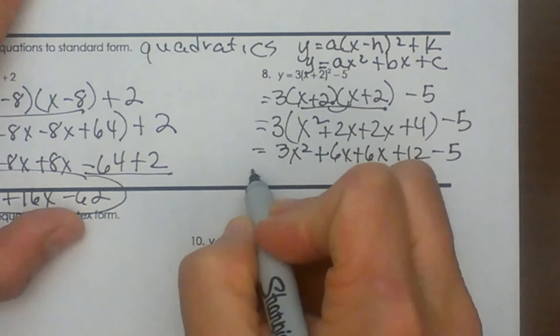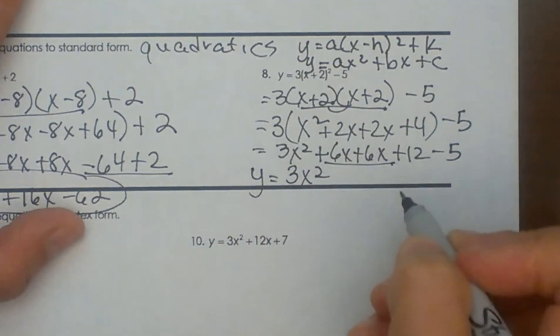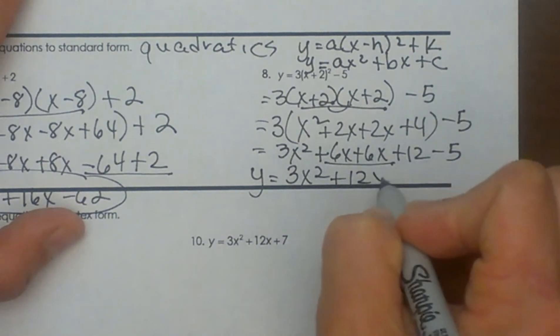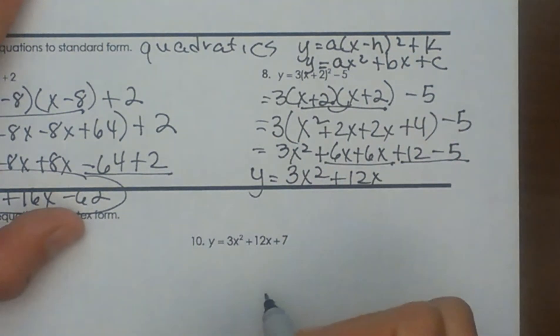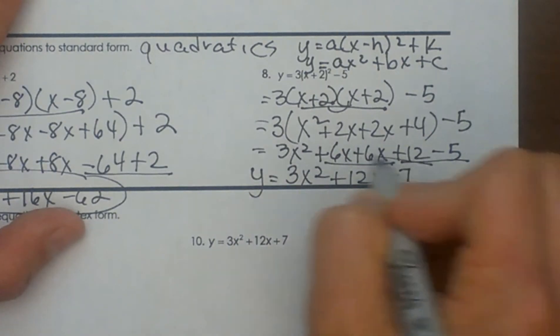So my final answer would be y = 3x². Combine my two middle terms: + 12x. Combine the 12 and the -5, and that combines to + 7, a positive 7.